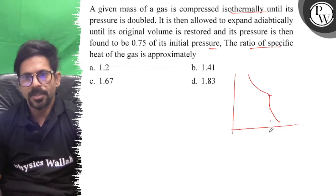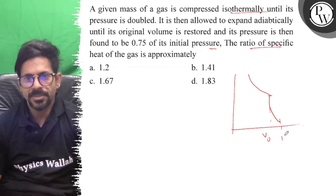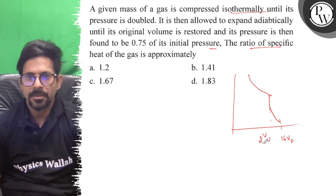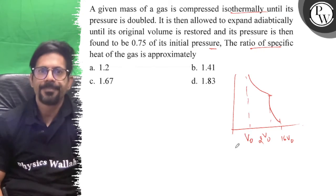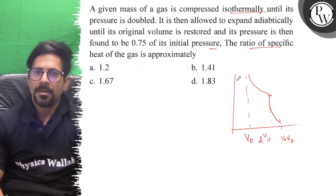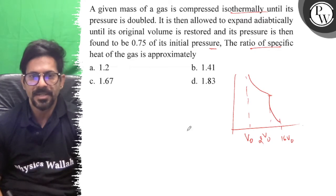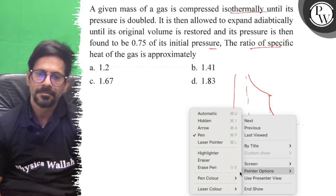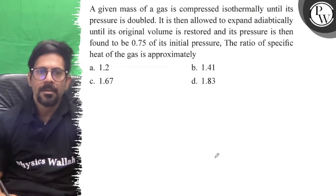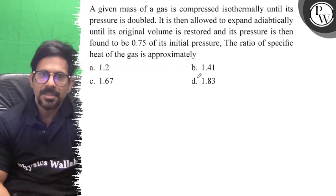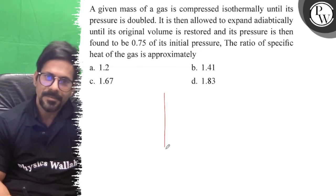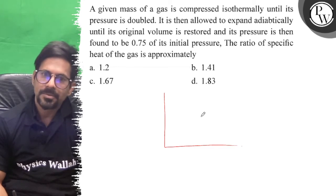The gas is isothermally compressed — so the volume goes from V0 to V0/2 as it is compressed. Given the mass of gas isothermally compressed until pressure is doubled.